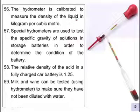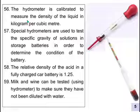The hydrometer is calibrated to measure the density of the liquid in kilograms per cubic meter. Special hydrometers are used to test the specific gravity of solutions in storage batteries in order to determine the condition of the battery.